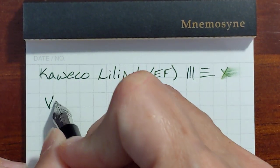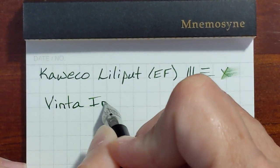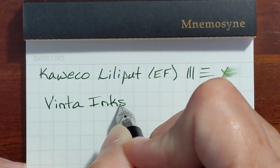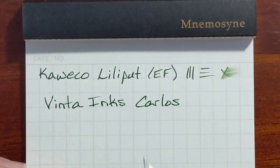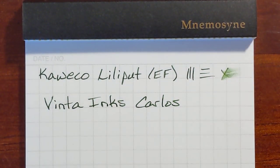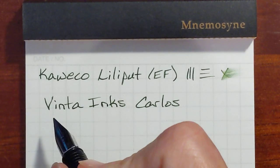So this is Vinta Inks Carlos. It's a little bit drier coming out of that nib but still it's not unpleasant. I'm happy with how well it's writing. Let's look at the CP1 one more time.